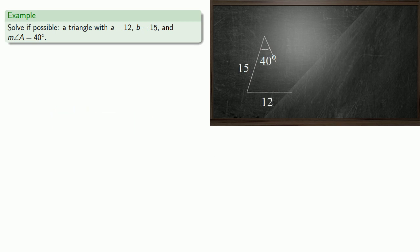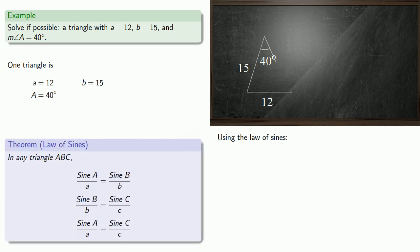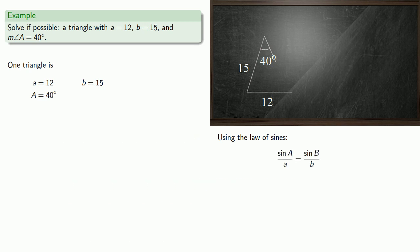So, to begin with, we can use the law of sines to find another angle. So, we have angle A and sides A and B, so the law of sines that we want to use includes angle A and the sides A and B.